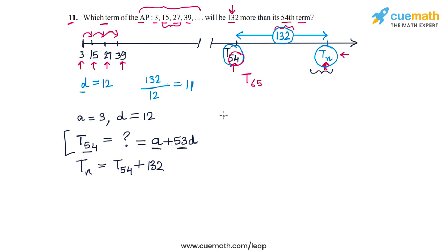So T54 is a plus 53d. This means that the nth term, which we are trying to find, is T54 plus 132. Now T54 is a plus 53d, and this 132 I am going to write as 11 times 12.